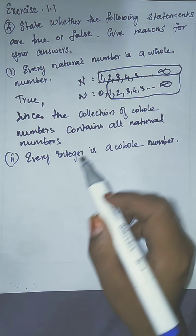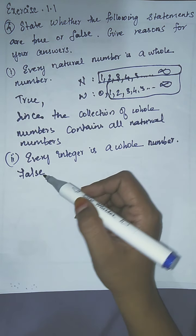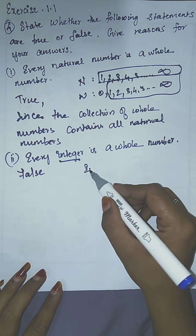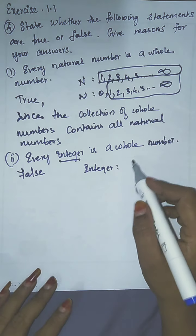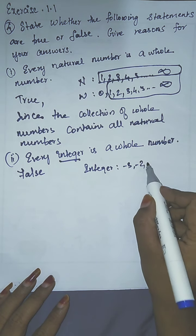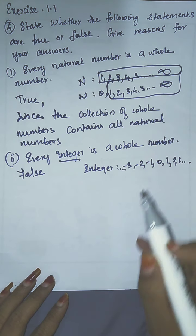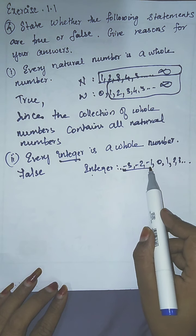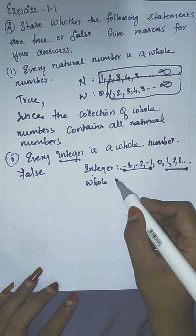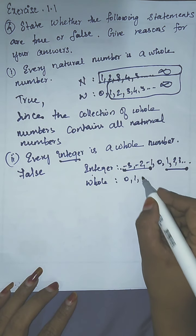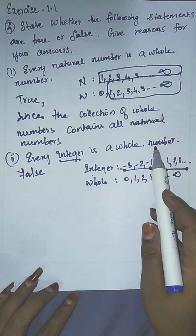The next statement is: every integer is a whole number. The answer is false. Integers are numbers from negative to positive, like minus 3, minus 2, minus 1, 0, 1, 2, 3 and so on. Integers contain both negative values and positive values, whereas whole numbers are 0, 1, 2, 3 up to infinite.